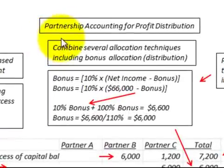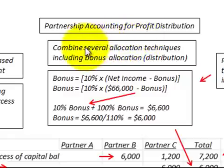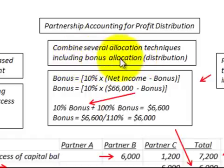We're going to be looking at partnership accounting for a profit distribution — calculating the profit and how it would be distributed between partners in a partnership. We're going to be combining several allocation techniques, including the bonus allocation or distribution of this bonus.